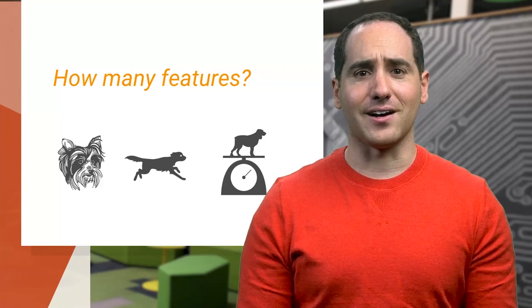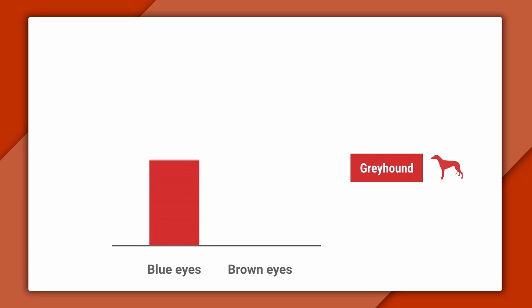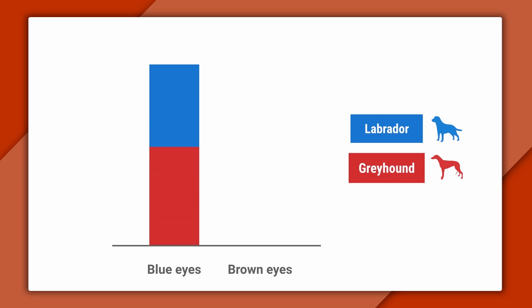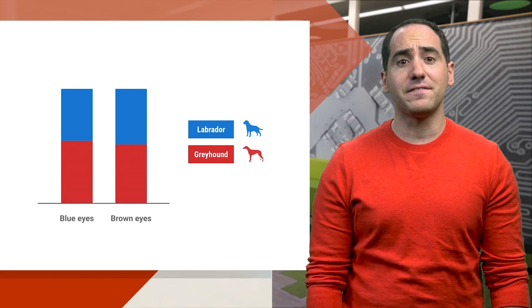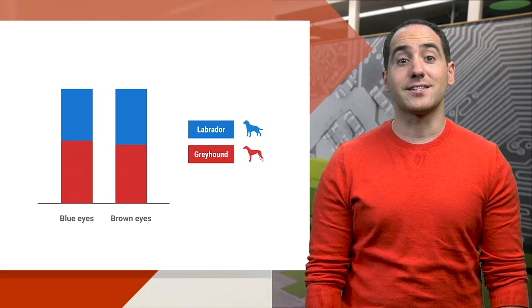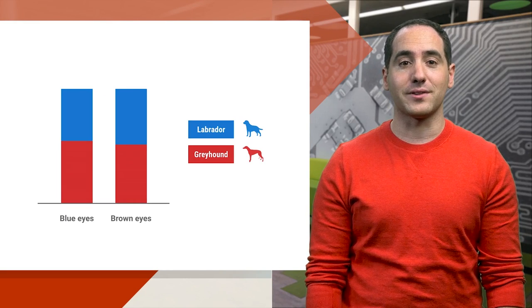Now let's look at another feature like eye color. Just for this toy example, let's imagine dogs have only two eye colors, blue and brown. And let's say the color of their eyes doesn't depend on the breed of dog. Here's what a histogram might look like for this example. For most values, the distribution is about 50-50, so this feature tells us nothing because it doesn't correlate with the type of dog.